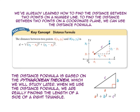We've already learned how to find the distance between two points on a number line. To find the distance between two points on a coordinate plane, we use the distance formula: the distance equals the square root of the difference between the two x-coordinates squared, plus the difference between the two y-coordinates squared. The distance formula is based on the Pythagorean theorem, which we'll study later. When we use the distance formula, we are finding the length of the hypotenuse of a right triangle.